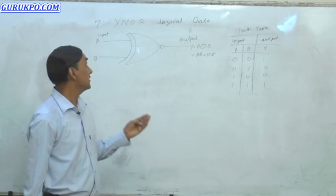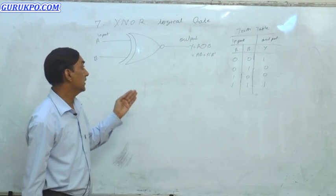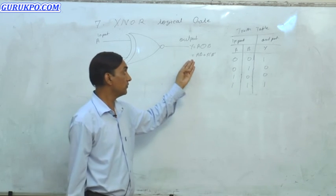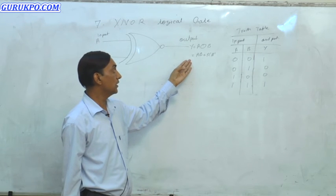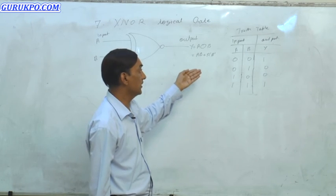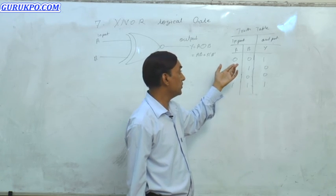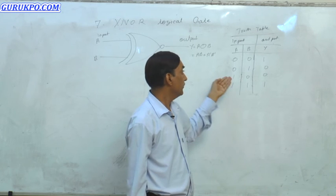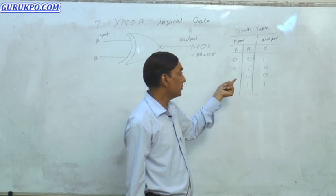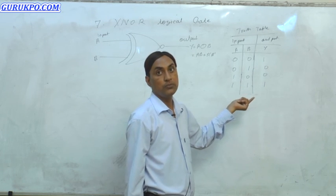Now we discuss about the seventh logic gate, the XNOR logical gate. There are two inputs A and B, and output is Y. The formula is Y = A·B + A'·B'. Truth table: inputs 0 and 0 give output 1; inputs 0 and 1 give output 0; inputs 1 and 0 give output 0; inputs 1 and 1 (high and high) give output 1.